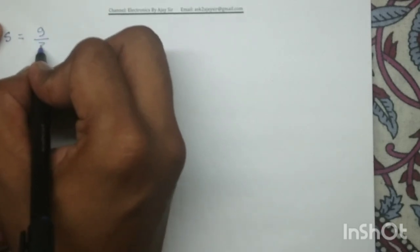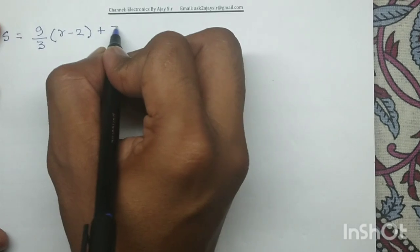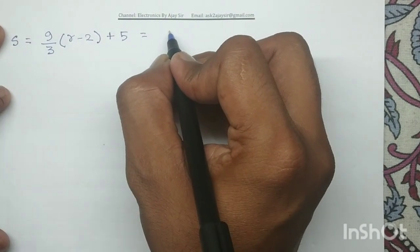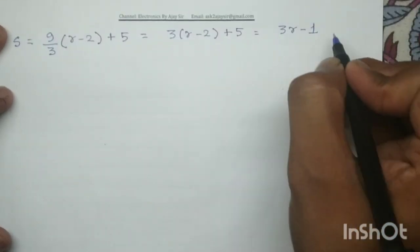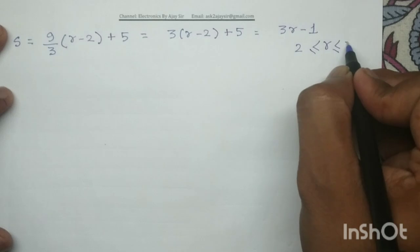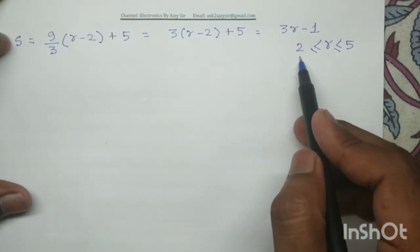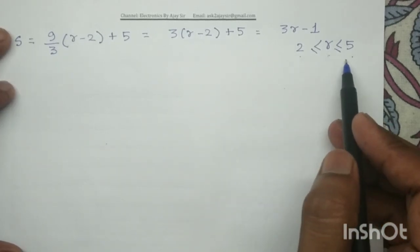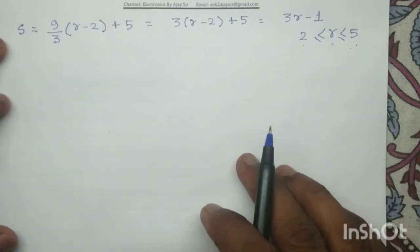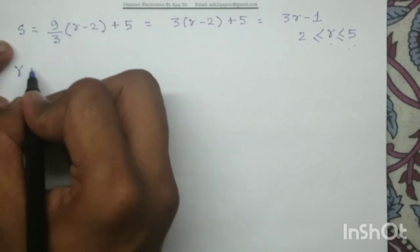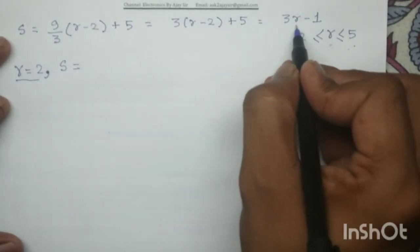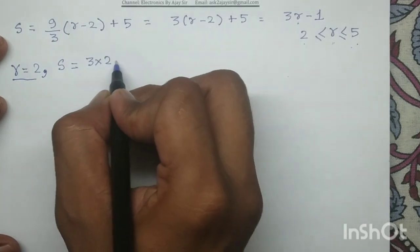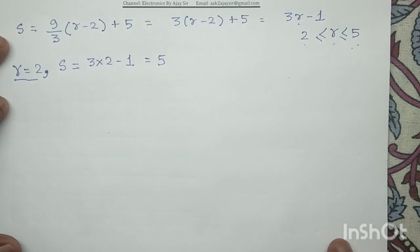On further simplification, this becomes 3 × (r − 2) + 5, which equals 3r − 1, where r varies from r_min = 2 to r_max = 5. Now we will determine the value of s for each value of r. For r = 2: s = 3×2 − 1 = 5.